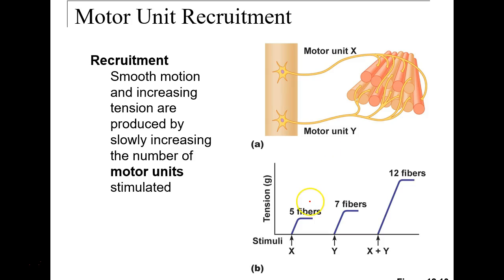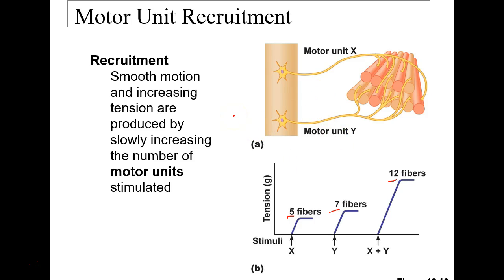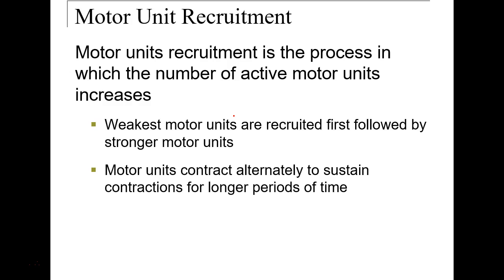Recruitment simply means we are not recruiting every motor unit in a muscle all at one time. We can have five fibers per unit, seven, or twelve — it depends on the type of movement we want to create. We alternate the activation of those motor units.